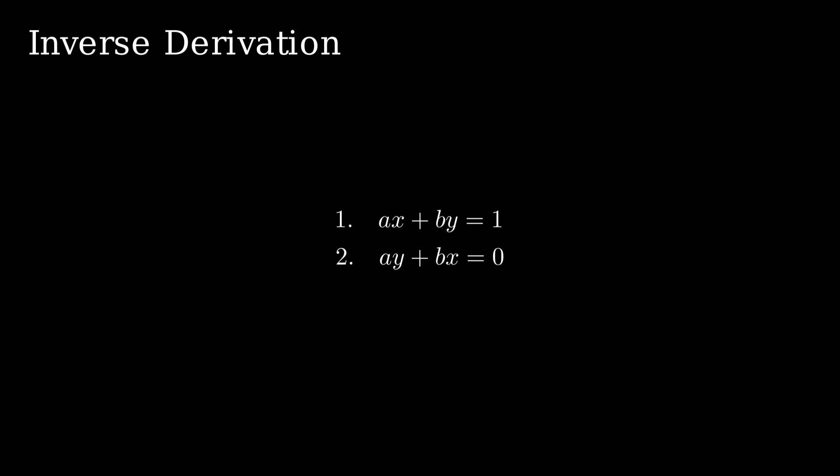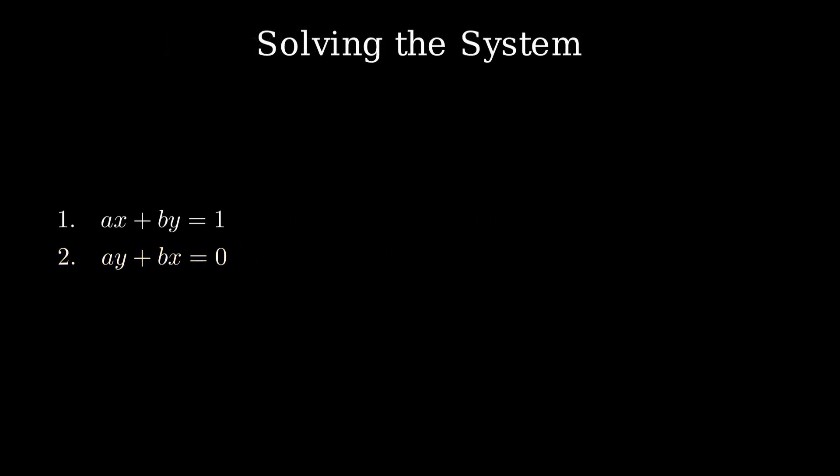That gives us a system of two equations. First, ax plus by equals 1, and second, ay plus bx equals 0. Solving this system, we start with the second equation: ay equals negative bx, which gives y equals negative bx over a. Substituting this into the first equation, we get ax minus b squared x over a equals 1. Simplifying, x equals a over a squared minus b squared. Plugging that back in, we find y equals negative b over a squared minus b squared.